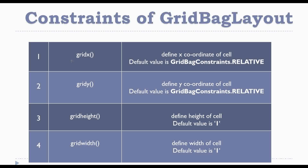The first constraint is gridx — don't confuse here, both g and x are lowercase. This is used to define the X coordinate of a cell. The default value of this constraint is GridBagConstraints.RELATIVE — here G, B, and C are capital, and the whole word RELATIVE is also capital. The second constraint is gridy, which is used to specify the Y coordinate of a cell, and its default value is the same as gridx.